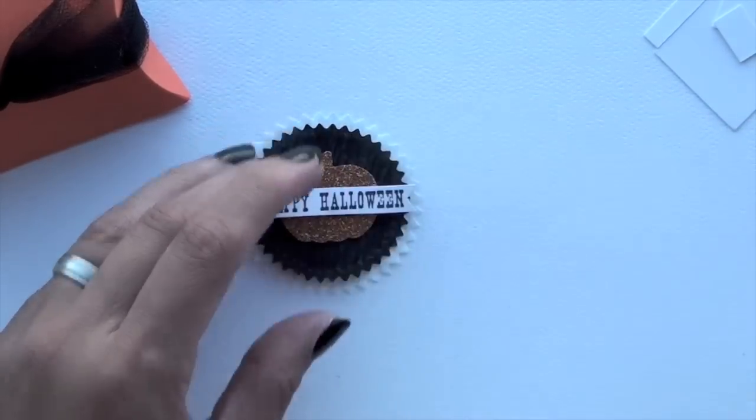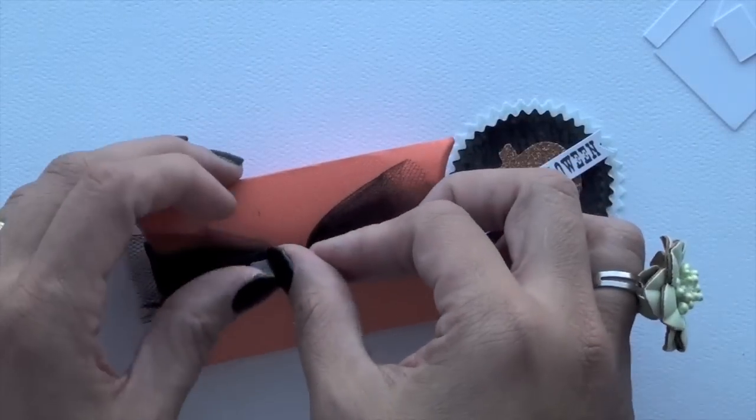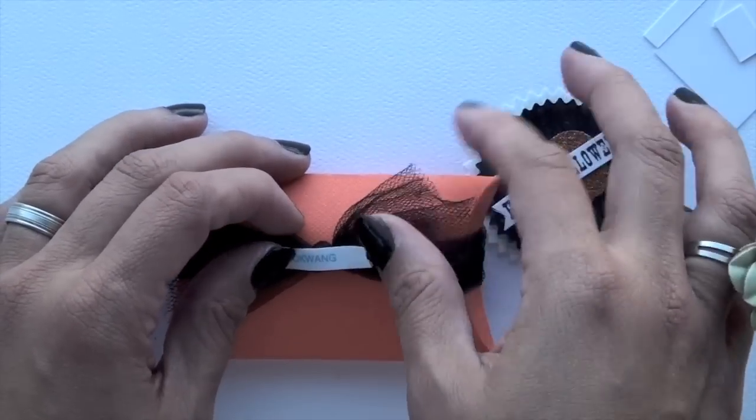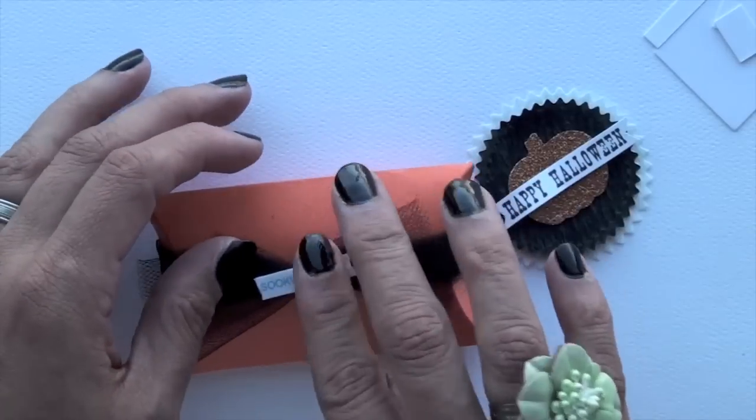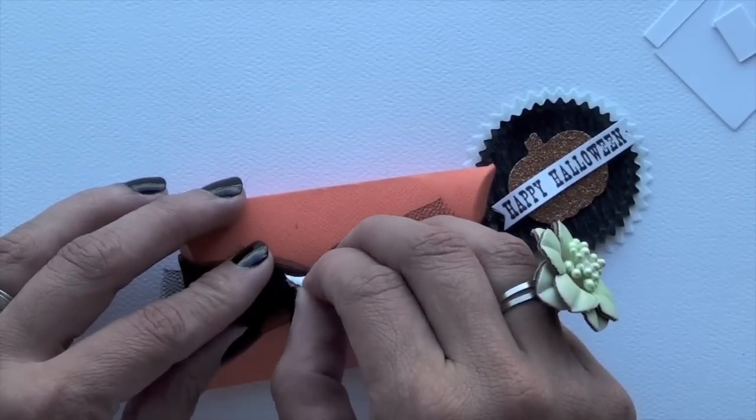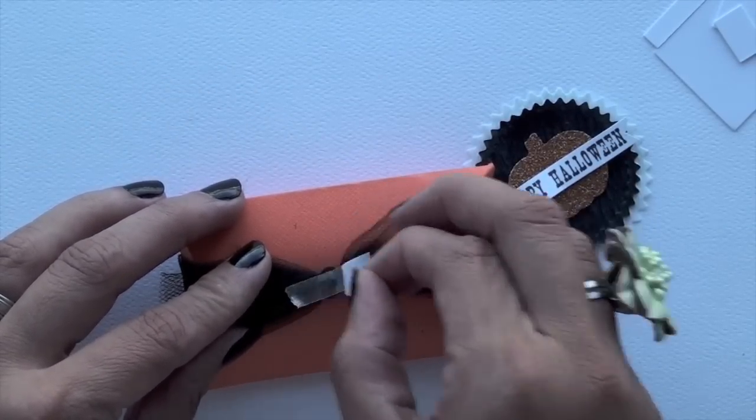And to put it on top of the box, I like to use double sided tape on top of the tulle. And at this point again, you can fix it how you'd like and then just set it on top. And with that, you're pretty much done.